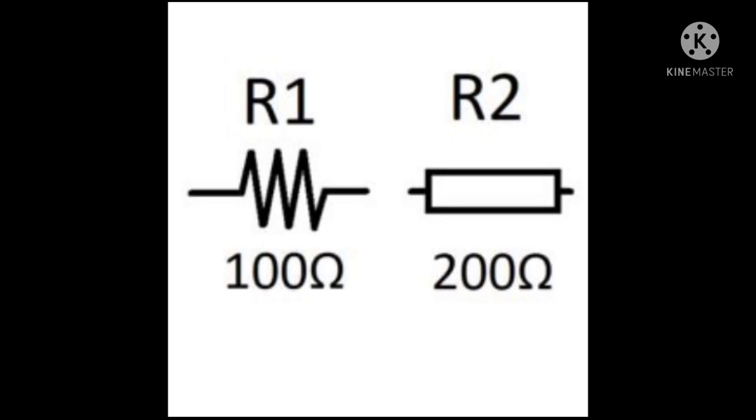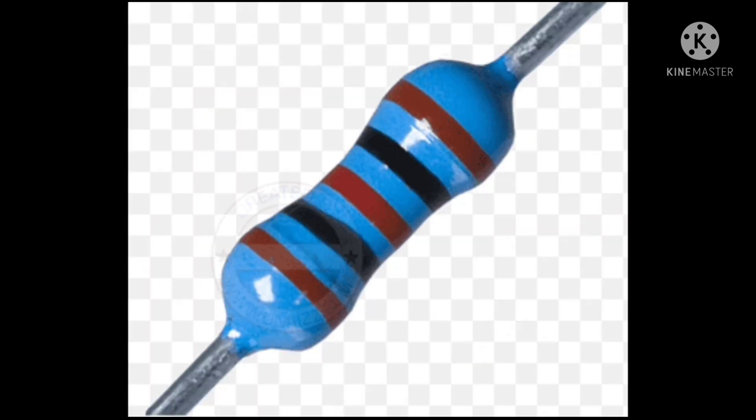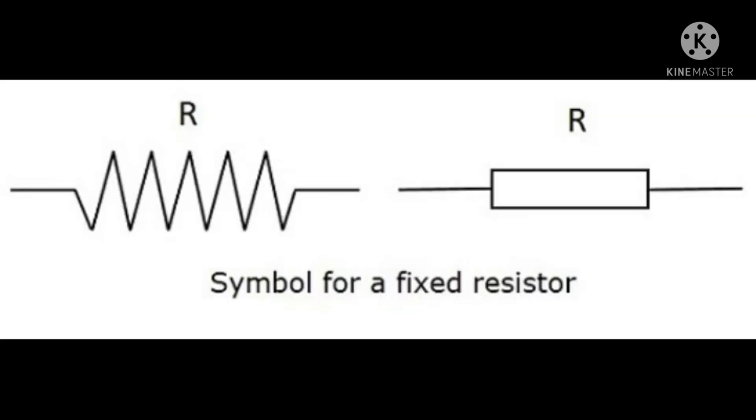Resistors are used in electronic circuits for transistor biasing, voltage division, controlling gain, fixing time constant, matching and loading circuits. Resistors are one type of linear resistors.